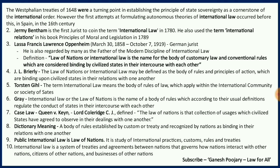There are a few aspects to observe from Oppenheim's definition. First, he says 'law of nations or international law,' meaning these two terms are equivalent. Second, they are names for the body of customary law and conventional rules — so he is giving the sources of international law as customary law and conventional rules. Third, he says these are considered binding by civilized states, referring mostly to European countries, and for their intercourse with each other — meaning transactions between those countries.